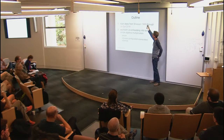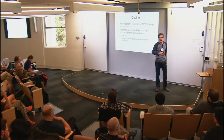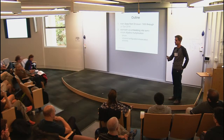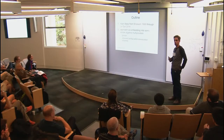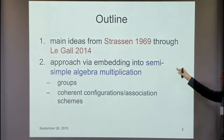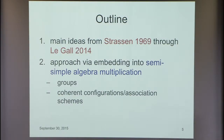In this talk I'd like to give a quick summary of the ideas starting from the very beginning leading up to the present day. I certainly won't do justice to the most recent things, but I'll give you a sense of what was going on. Then I'd like to spend the second part talking about our approach—developed with a whole list of co-authors—which works in a quite different way by embedding the problem into semi-simple algebra multiplication, involving group theory and connections to association schemes and coherent configurations.